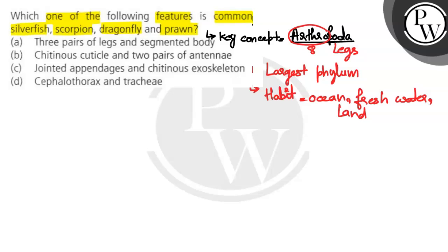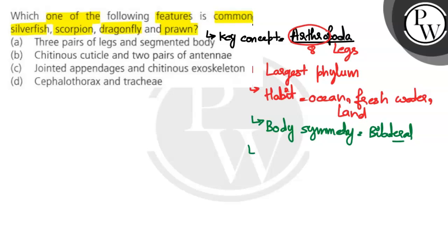If we talk about Arthropoda, the body symmetry is bilateral symmetry. That means if we cut the body from one plane, we get two equal halves. The body level of organization is organ system level, meaning we can find different organ systems. For example in cockroach, there is an excretory system, digestive system, respiratory, nervous, and reproductive system.